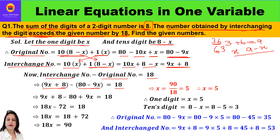Now solve it. Open the brackets — all signs of the second bracket will change. So we get 9x plus 8 minus 80 plus 9x equals 18. Combining like terms: 9x plus 9x is 18x, and 8 minus 80 is minus 72. So 18x minus 72 equals 18.